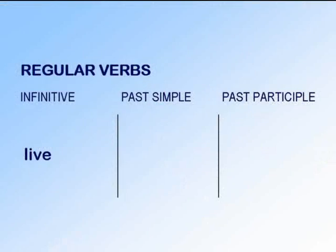English verbs are regular and irregular. In books, we see them in three columns: infinitive, past simple, past participle.